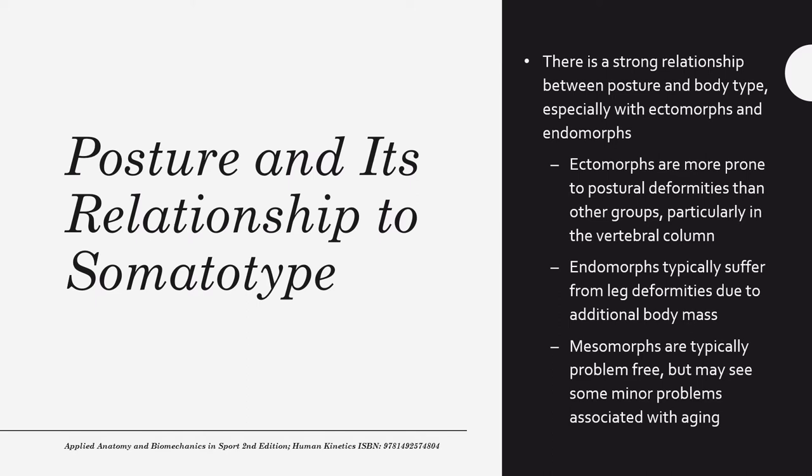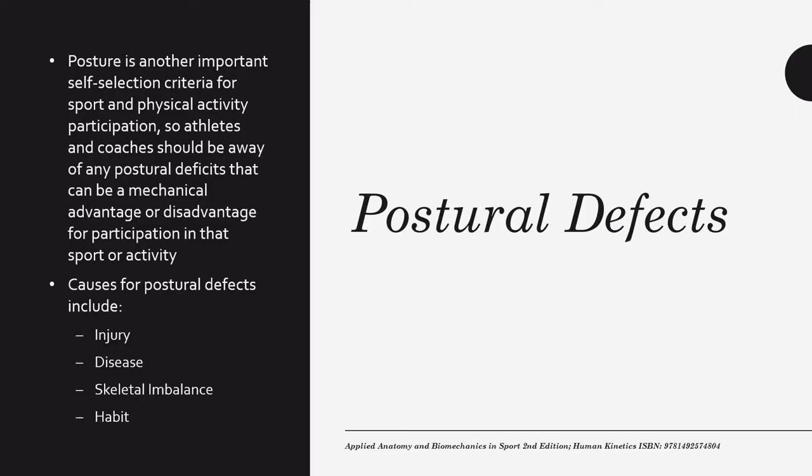Somatotype and posture are related, with a particularly strong relationship at the extremes — ectomorphs and endomorphs. Ectomorphs are more prone to postural deformities than any other group, particularly in the vertebral column, including things like scoliosis, kyphosis, and lordosis. Endomorphs typically suffer from leg deformities due to the additional body mass they carry. Mesomorphs are generally problem-free, though minor problems can be associated with aging and improper training practices.